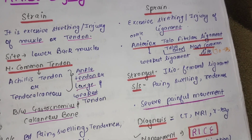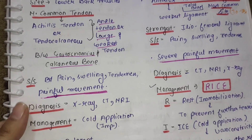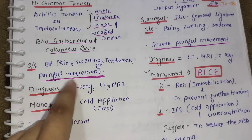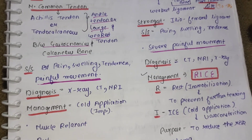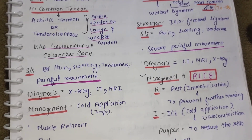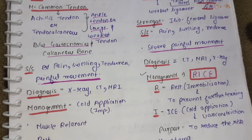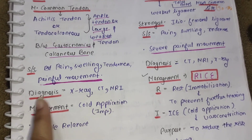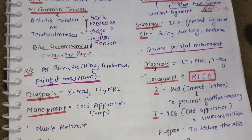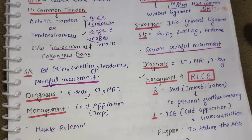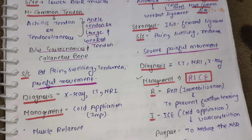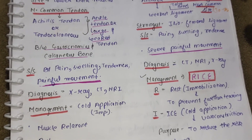Next, sign and symptoms of strain के patient में pain देखने को मिल सकता है, swelling, tenderness, and painful movement होती है. Diagnose करने के लिए X-ray किया जा सकता है, CT scan किया जा सकता है, and MRI किया जा सकता है.